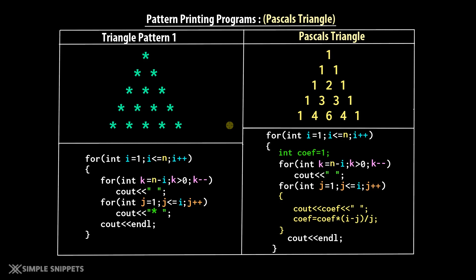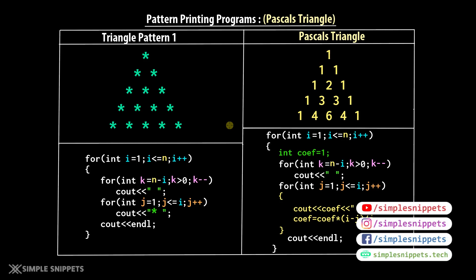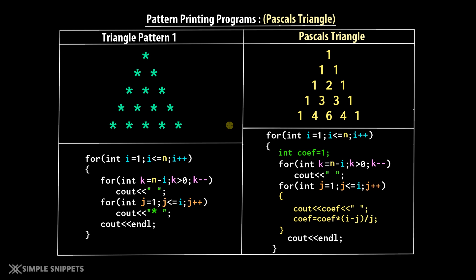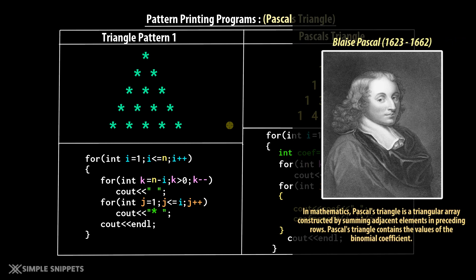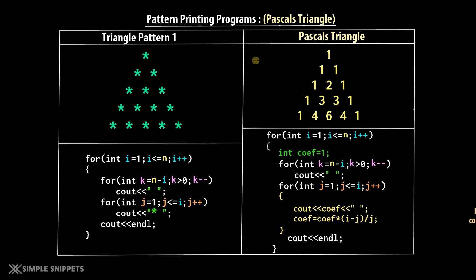Hey, what's going on guys, Tanma here for Simple Snippets. Let's continue with our pattern printing program. Today we are going to understand what Pascal's Triangle is and how to print the values in it. Pascal's Triangle was given by the famous mathematician and philosopher Blaise Pascal, a French mathematician. It corresponds to the coefficients of a binomial expression.